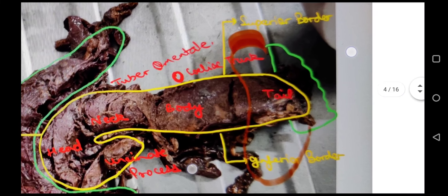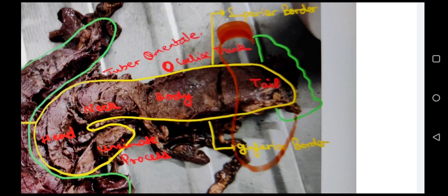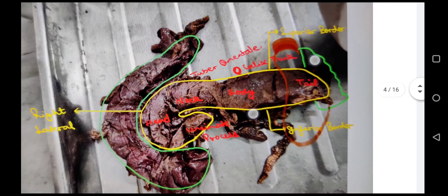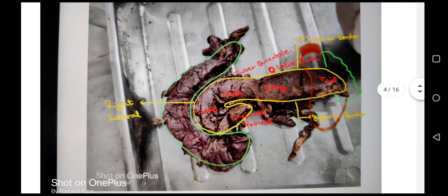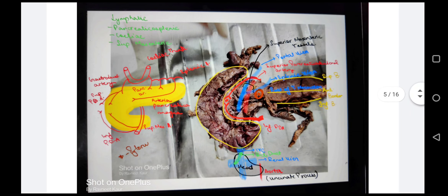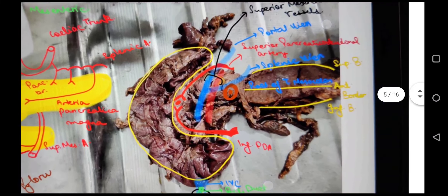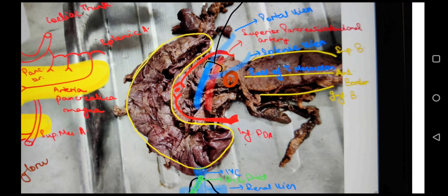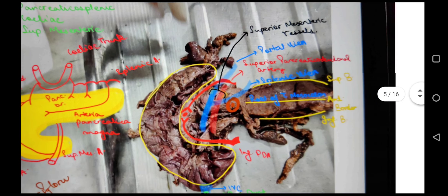The tail of the pancreas goes into the posterior of the spleen on the visceral surface, and is related to the left kidney and left suprarenal gland. The head's superior border is related to the superior pancreaticoduodenal artery, the inferior border is related to the inferior pancreaticoduodenal artery, and the right lateral border is related to the anastomosis between the superior and inferior pancreaticoduodenal arteries.